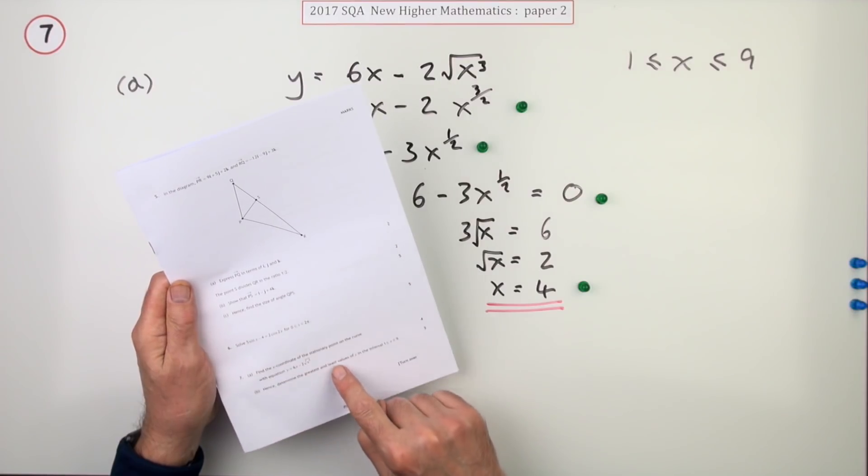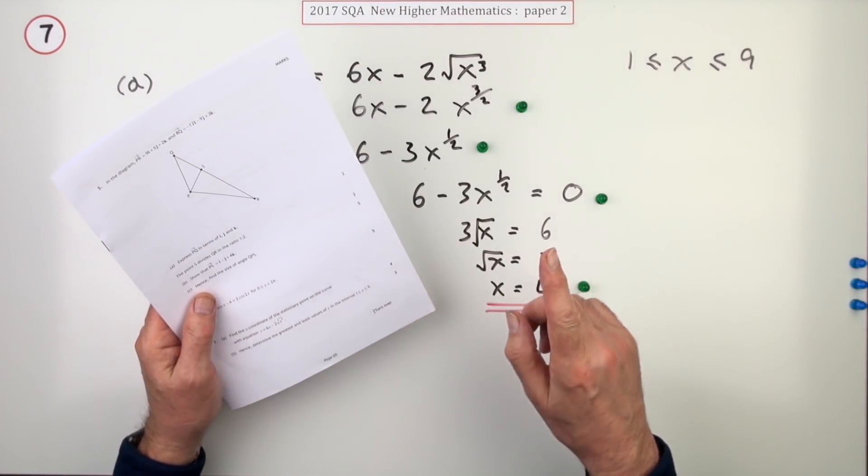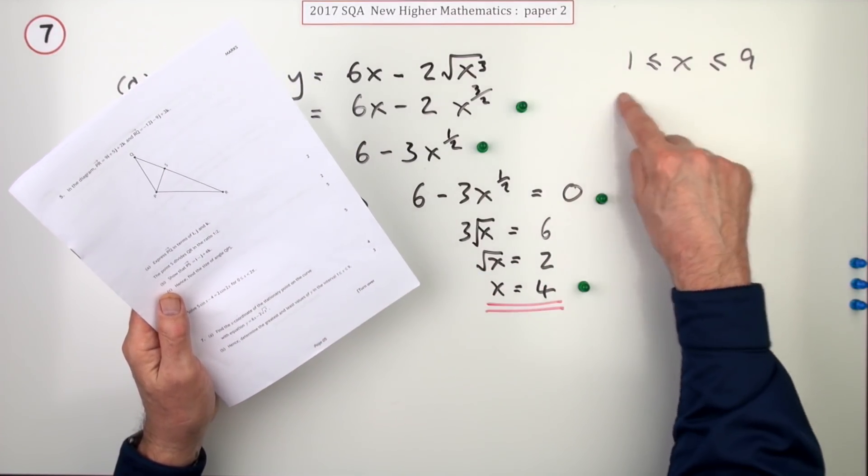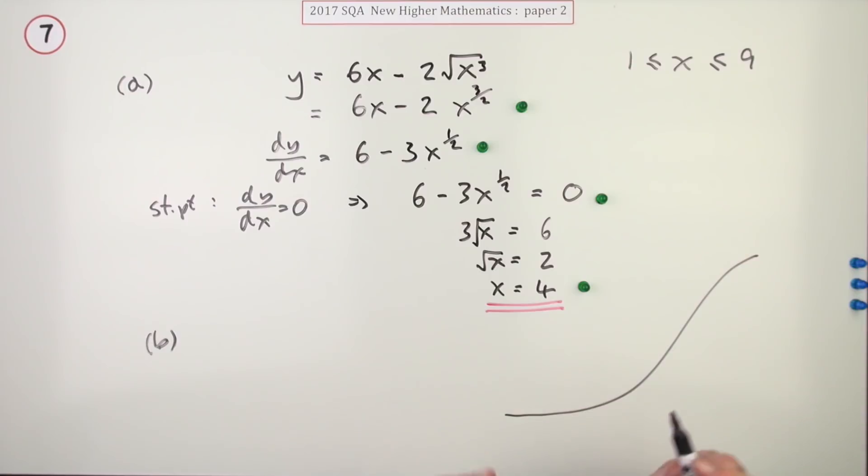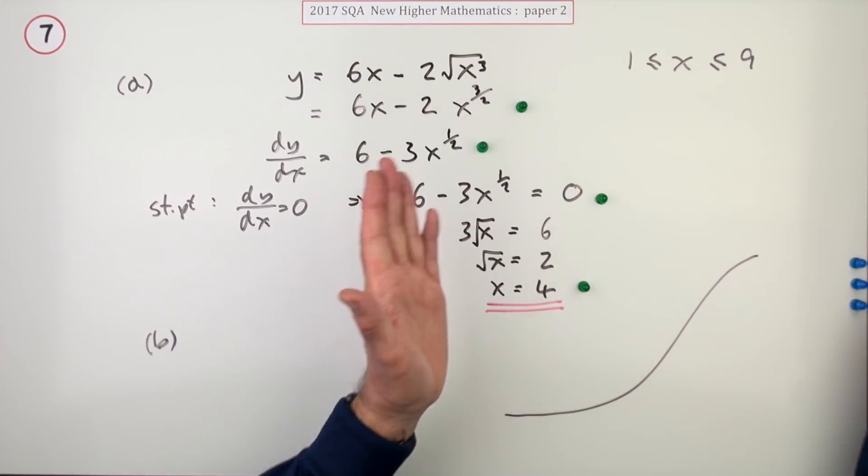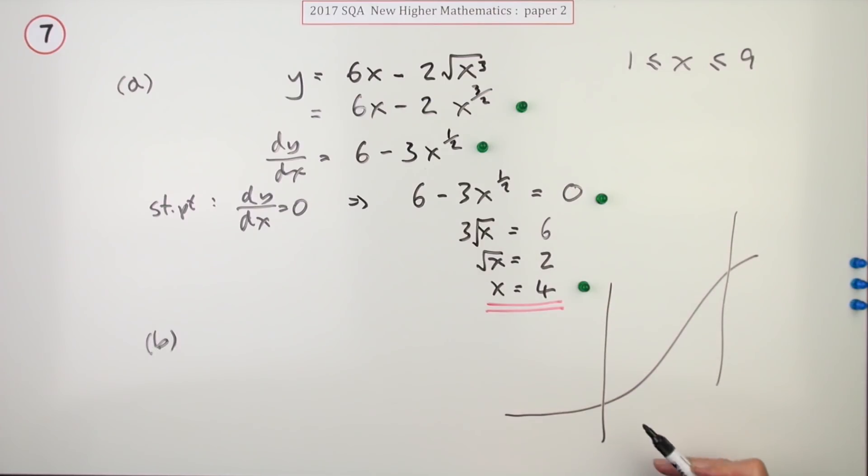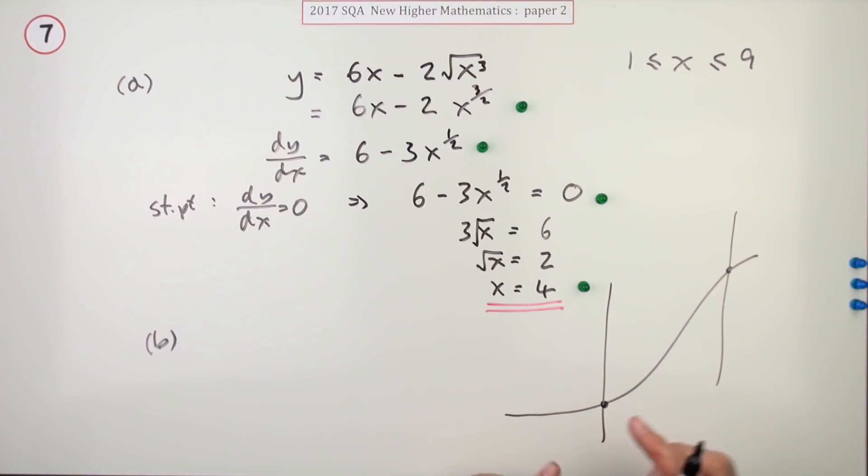Part b, determine the greatest and least values. You have to watch, there's no mention of stationary points or maximum turning points or minimum turning points, it's just greatest and least values in an interval. And here's the interval. Because what happens is you've got some function or other, the greatest and least values in an interval means you're drawing the curtains in, you're drawing the curtains in and you're just looking at a particular part. For a simple function the greatest and least values will occur at the boundaries, so in this case it should happen at one and nine.